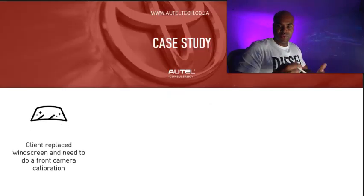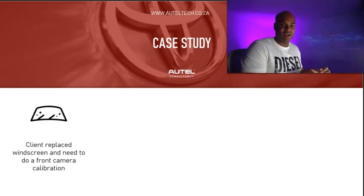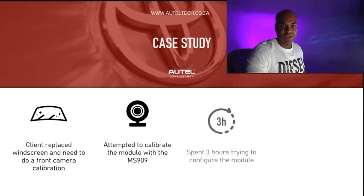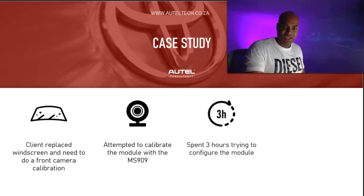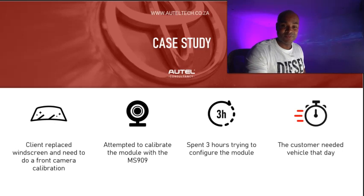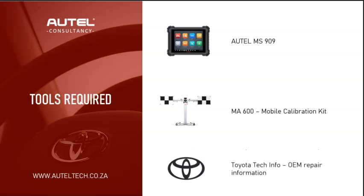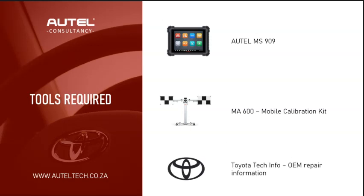To give you a quick background: the client replaced a windscreen and needed to do a front camera calibration. He attempted this with the MS-909 and failed — and what made things worse was he spent three hours trying to configure this module and couldn't figure it out, while his client needed to pick up the car that same day. The tools he was using were the MS-909, the MA-600 mobile calibration kit, and the Toyota Tech Info OEM repair information.